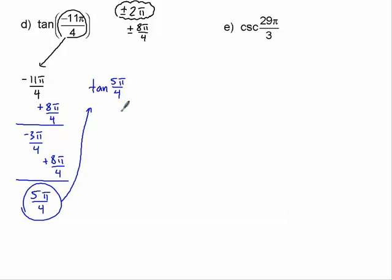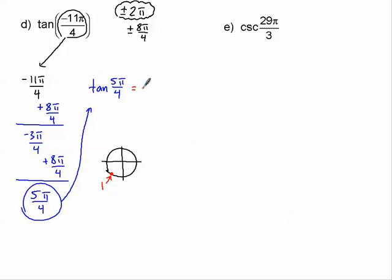So this problem becomes the tangent of 5π/4. When somebody says pi over four, I know I'm talking about the middle ones: 1π/4, 3π/4, 5π/4, 7π/4. Five pi over four is right there. I know that the tangent of the pi-over-four angles are ones — it just depends on whether it's positive or negative. In the third quadrant, tangent must be positive because it's a negative divided by a negative. So my answer is one.